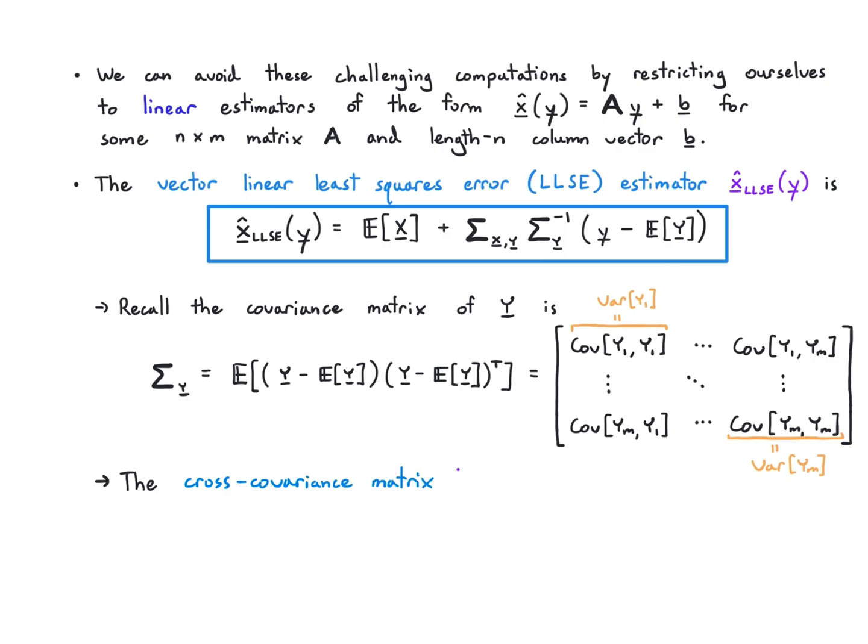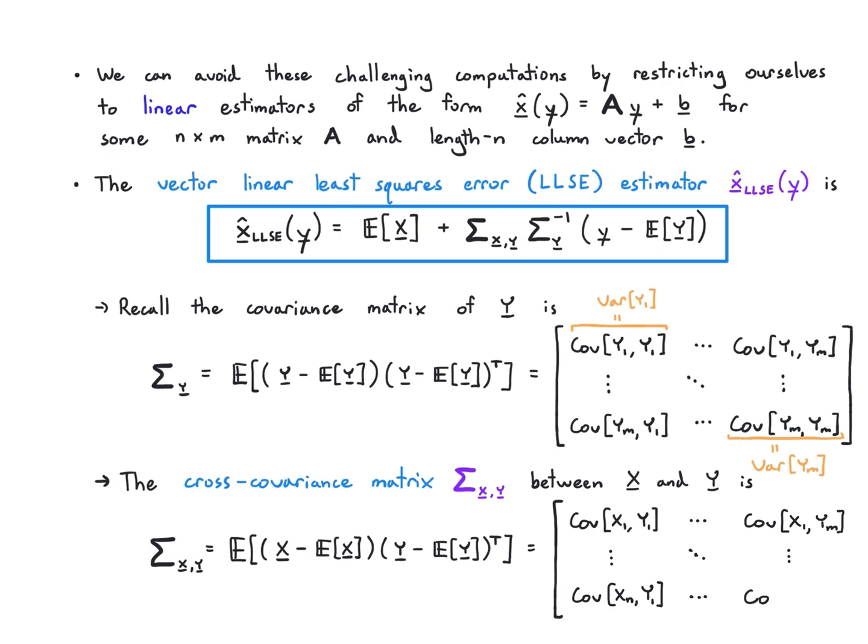The cross covariance matrix is just the same thing, except we're now taking the covariance between x and y terms. I take the outer product between x minus its mean and y minus its mean, and end up with covariance of x1, y1 down to covariance of xn, y1, and so on going down - covariance of x1, ym down to covariance of xn, ym. I just organize all the covariances between x and y terms into a matrix. Those are the two matrices that I actually need to work out.